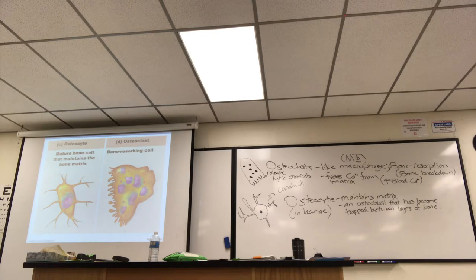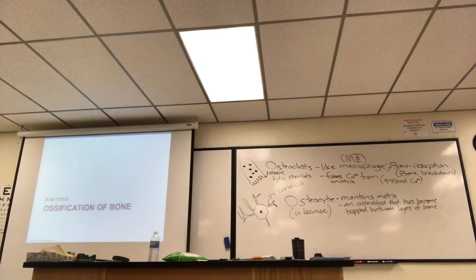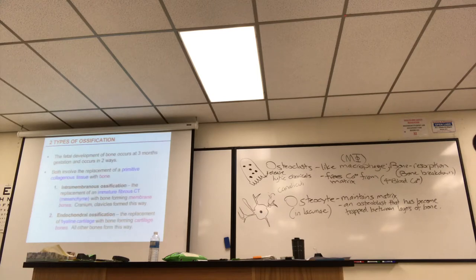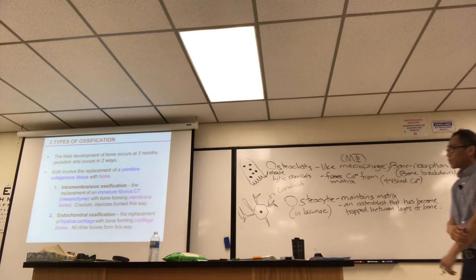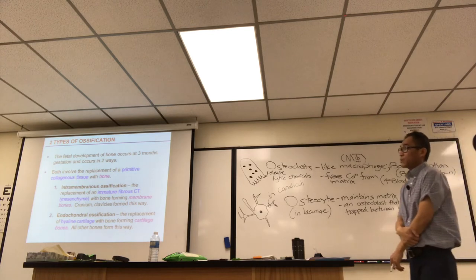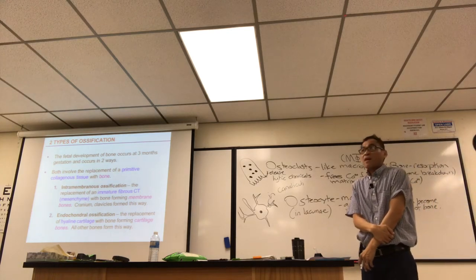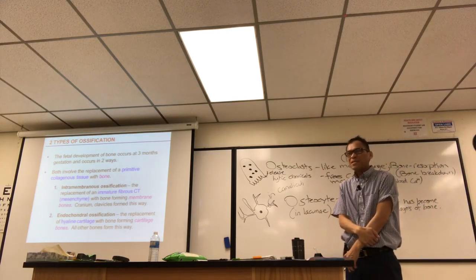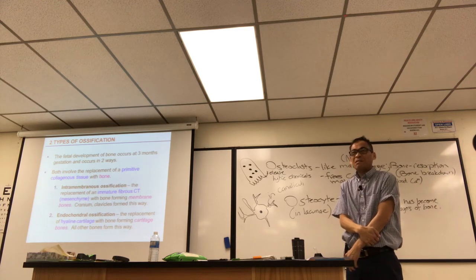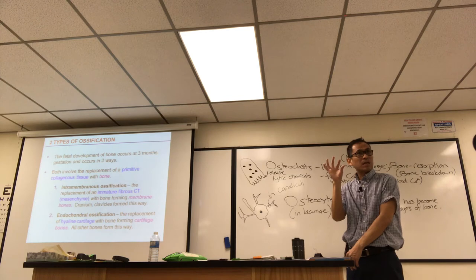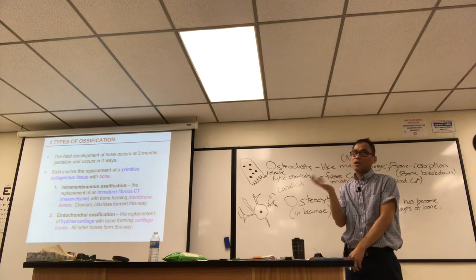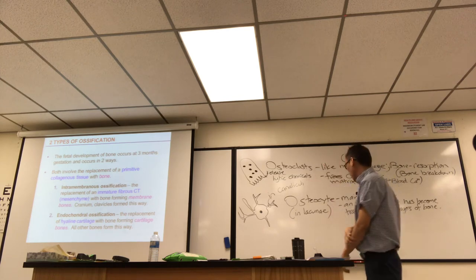Now let's talk about how bone forms in development — the process of ossification, meaning tissue becoming bony. This happens in development when we want to develop our skeleton, but it can also happen when we don't want it — you can have ossification of blood vessels, which is not good. Ossified blood vessels get stiff and crackly, and are prone to aneurysm.